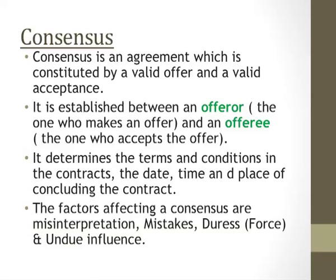By consensus, this is what I am referring to: consensus is an agreement constituted by a valid offer and a valid acceptance. It is established between an offerer, who is the one who makes an offer, and an offeree, the one who accepts the offer. It determines the terms and conditions in the contract, the date, the time, and place of concluding the contract. The factors affecting consensus are misrepresentation, mistakes, duress — which is force — and undue influence.